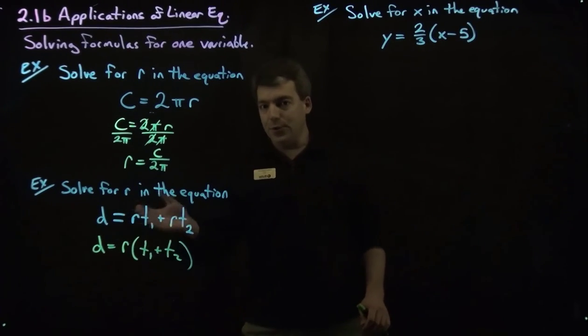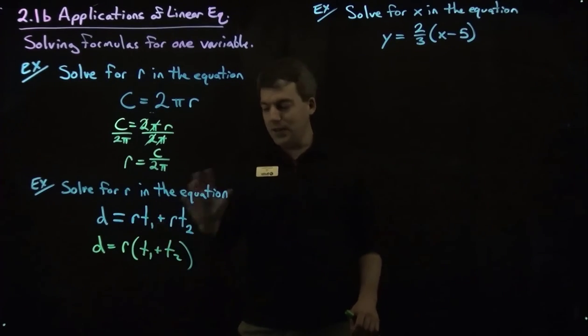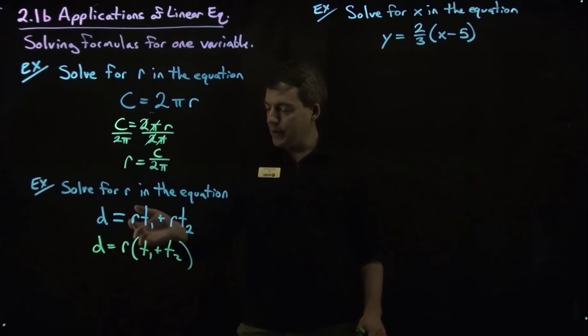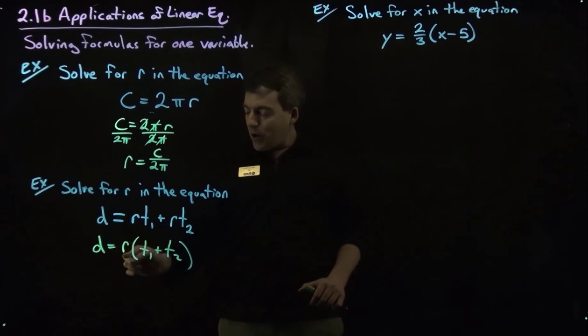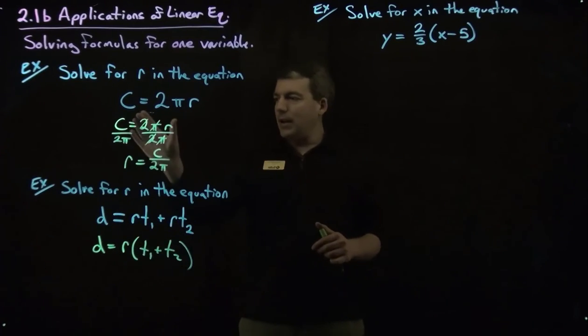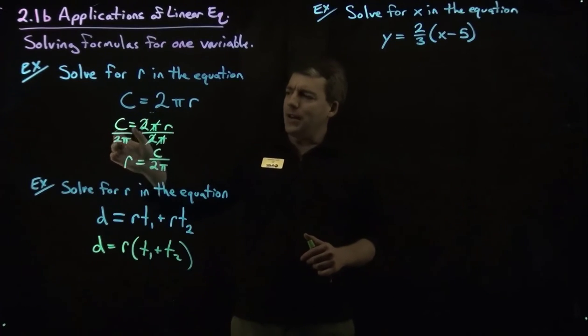Now you can always distribute and check to see if we factored correctly. So let's see if we did this right. So r times t1 is r times t1 plus r times t2. There we go. Okay, now this is set up a little bit better because now we have d equals r times something. Kind of like we have up here. We had the r times something and we divide it to get the r by itself.